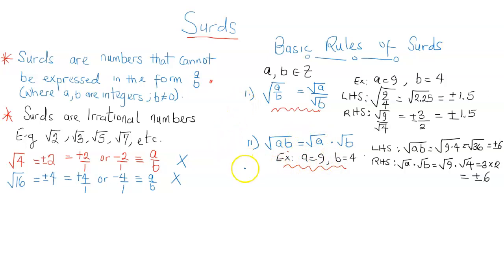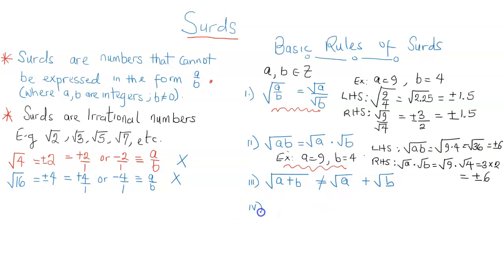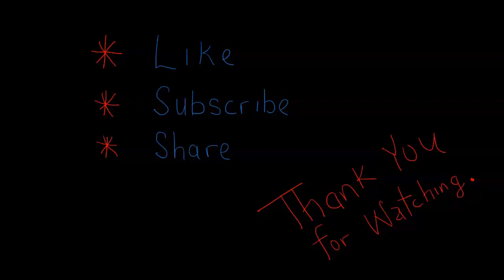Now, can we extend these rules to addition or subtraction? Of course not. The square root of a plus b is not equal to the square root of a plus the square root of b. Similarly, the square root of a minus b is not equal to the square root of a minus the square root of b. I'm going to ask you to confirm this and drop whatever you find in the comment section. I hope you found this video useful — please like, subscribe, and share. Thank you for watching, see you in the next video.